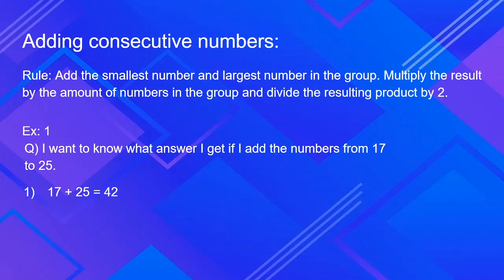The second thing we have to do is multiply the result by the amount of numbers in the group. There are 9 numbers from 17 to 25, so 9 times 42 which is 378.